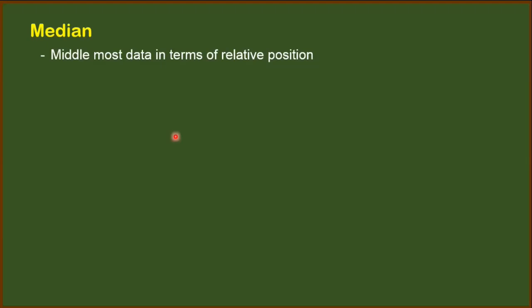Median is the middlemost data in terms of relative position. When we say median, we are actually positioning the data and selecting the middlemost data based on that position. It is symbolized by MD or X with a tilde on top.